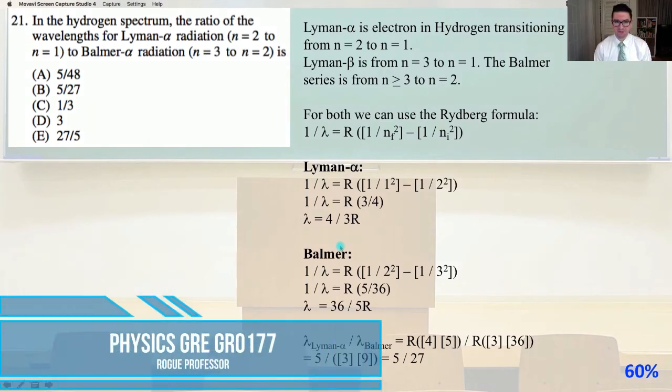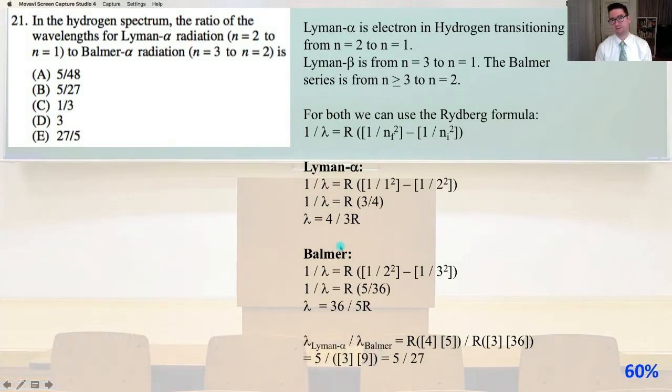For a go or no go, we are on go for problem number 21 of Physics GRE GR 0177. In the hydrogen spectrum, the ratio of the wavelengths for the Lyman alpha radiation from n equals 2 to n equals 1 to the Balmer alpha radiation from n equals 3 to n equals 2 is.